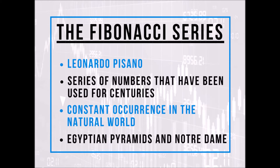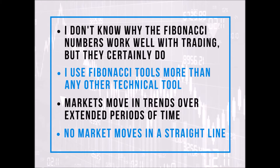In a beehive, divide the number of female bees by the number of male bees and you'll get a Fibonacci number of 1.618. The Fibonacci series frequently appears in geometry, for example in pentagons and hexagons, in Islamic decorations, and it was used in the design of Notre Dame in Paris, as well as many more recent examples of design and architecture.